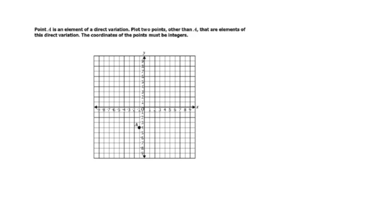Point A is an element of a direct variation — plot two points other than A that are also elements. We know it goes through the origin. From point A to (0,0), I can determine the slope. The constant of variation is 4 over 1, so I can go up 4 over 1 to get additional points. I only need two: the origin (0,0) and one other point found by applying the slope. I can also work backwards to get another point.